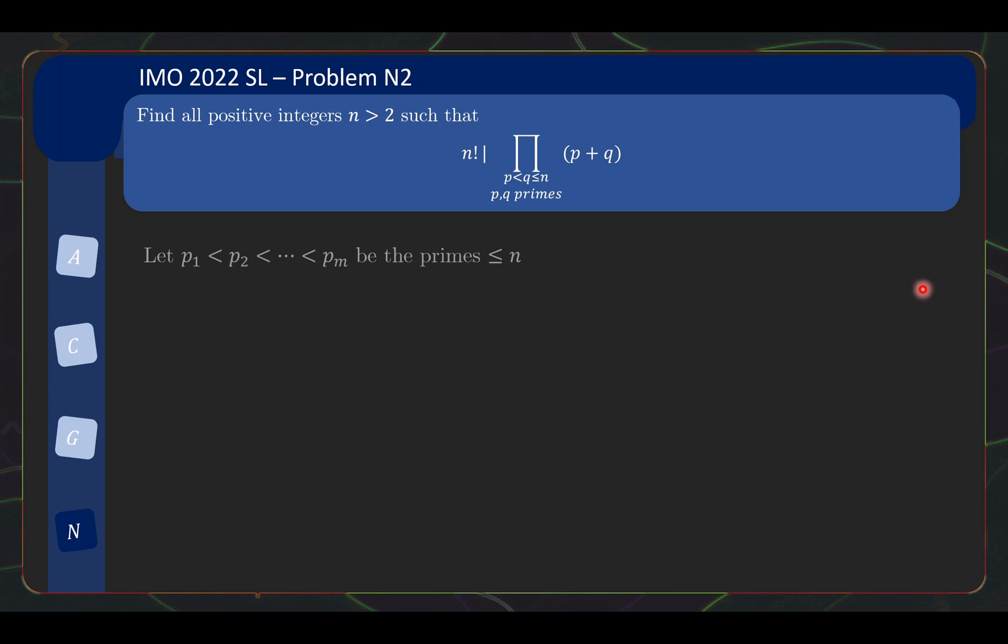When faced with a problem like this, it is helpful to consider what I call the extreme cases. If we let p₁ to p_m be the primes less than or equal to n, we're going to take a look at the largest prime and see if it tells us anything useful about n. p_m appears in n! here, which means p_m must divide the right side, which means p_m divides some p_i + p_j.